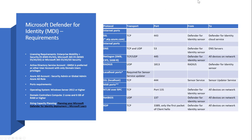For licensing requirements, MDI needs EMS E5 or A5, Microsoft 365 E5, A5, or G5, or Microsoft 365 E5, A5, or G5 Security. Many organizations may already have these licenses. If you already own them but aren't using MDI, you are missing a very important security service in your environment. This video is a real value add — please watch it carefully until the end.